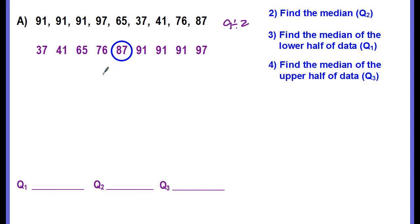Okay, then we want to find the median of the lower half of the data. So that means all of the data that's to the left of the median, we want to find the middle number of this data. Now as you'll notice, there's four numbers. That means the median is going to fall in between the 41 and the 65. So to find what the median of those two numbers are, we just add them up and divide by 2. So 41 plus 65 is 106. Divide 106 by 2 and we get 53. So the median of this lower half is 53. This is our quartile 1.